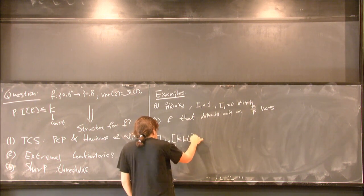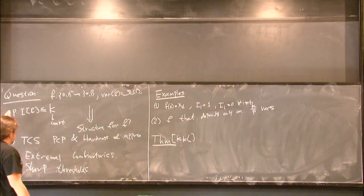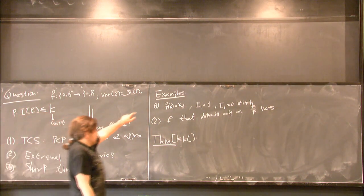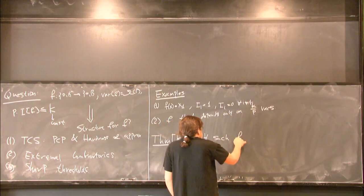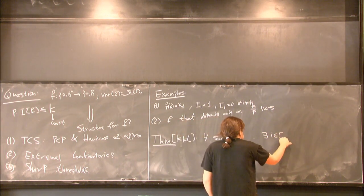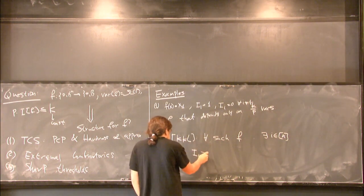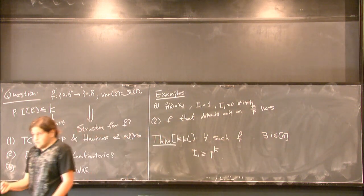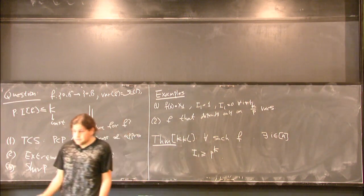So, the first result, which is a really important one, is due to Kahn-Kalai and Linial, they show that any function with these conditions, there exists at least one variable that has large influence, meaning it resembles the first example. So, for any such f, there exists a variable i, whose influence is surprisingly high. And quantitatively, it says that it's at least p to the k. So, if we think of p as half and k as constant, it means that it has constant influence, which is a lot.